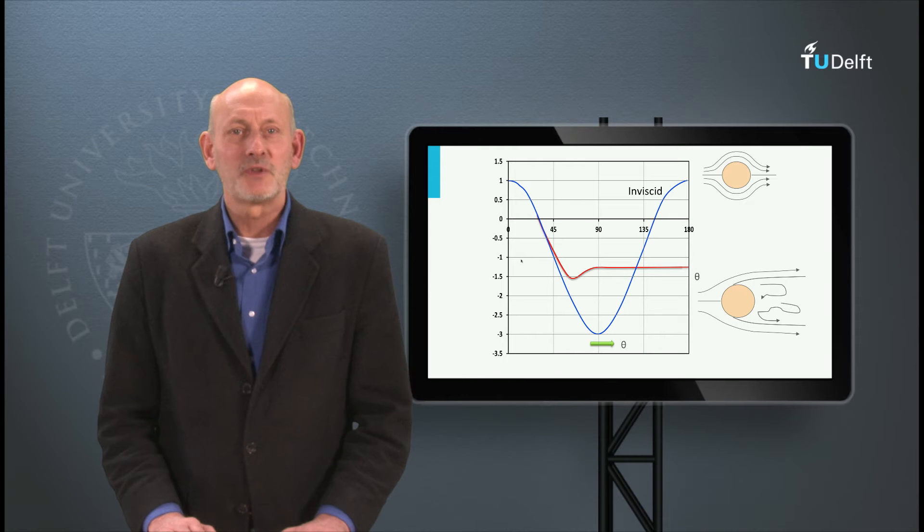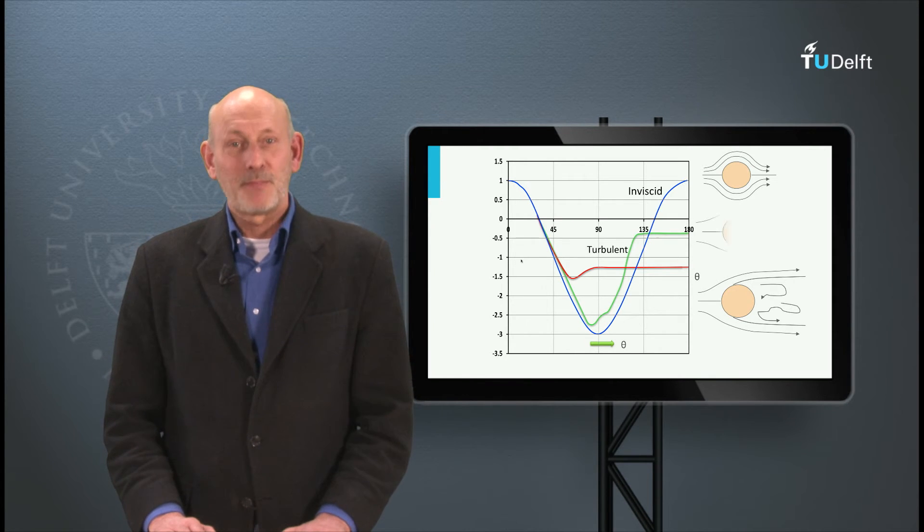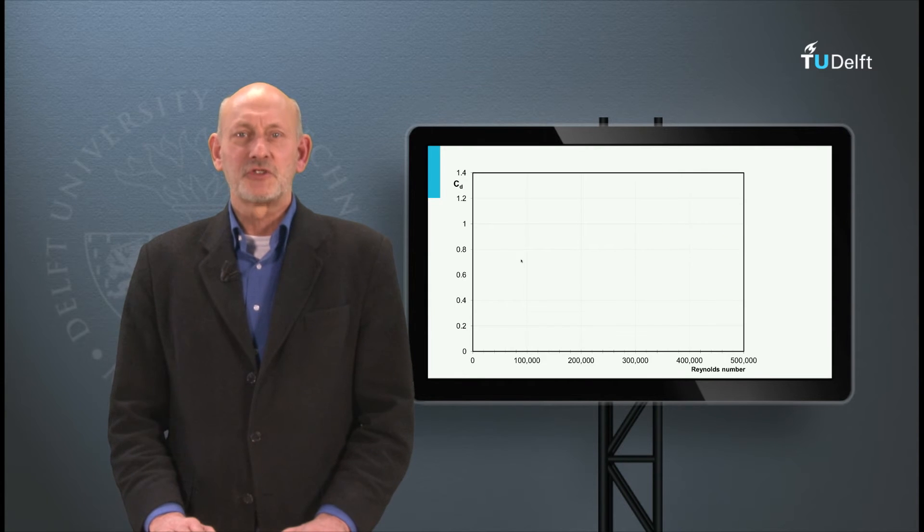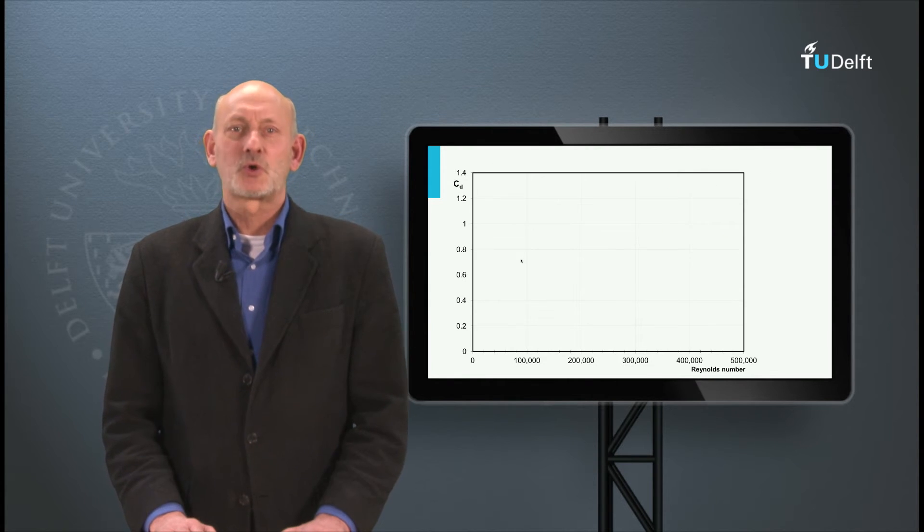The result is shown in the CP distribution. The pressure at the back of the cylinder has increased, the wake is smaller and the pressure drag has decreased significantly. The Reynolds number at which this occurs is called the critical Reynolds number for a cylinder.